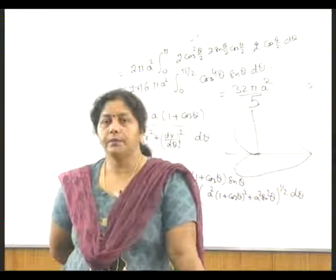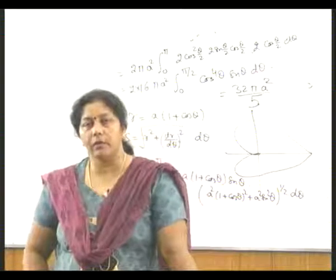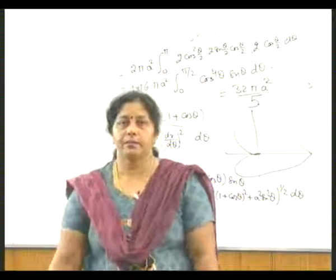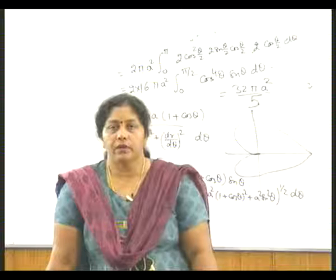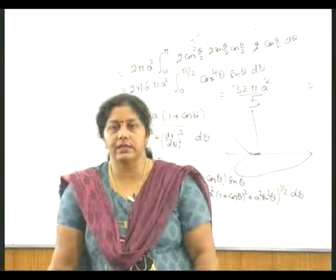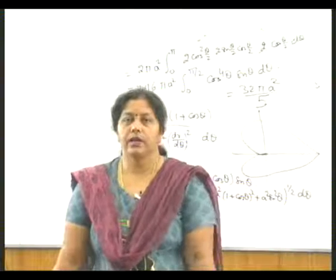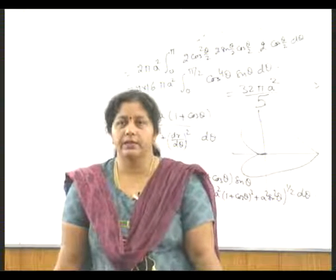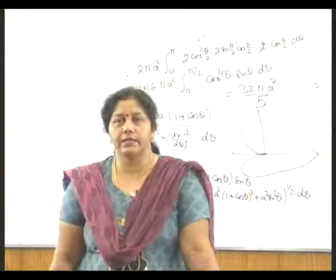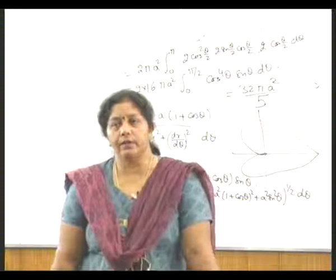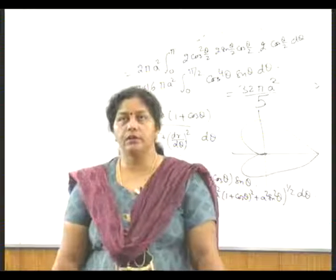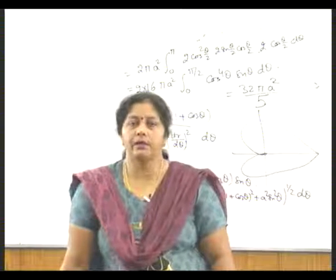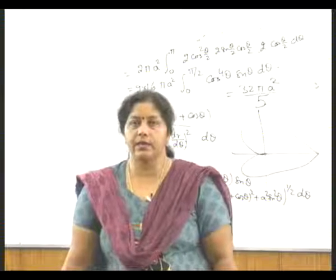Now we come to the volume. Volume is normally the revolution of the curve about any axis. If it is about the x-axis, then we take the volume as the integral from a to b of πy² dx. If it is a revolution about the y-axis, then it is the integral from c to d of πx² dy. For a polar curve, y is r sinθ and x is r cosθ, so we can calculate dx accordingly. So if we have to find the volume about the x-axis it is the integral of πy² dx, and about the y-axis it is the integral of πx² dy.